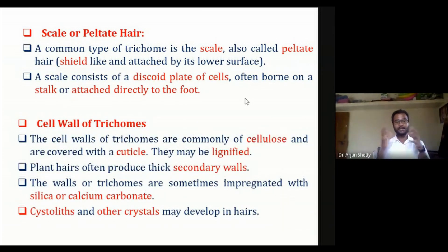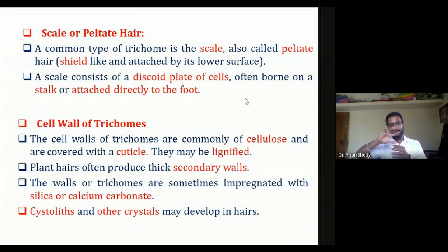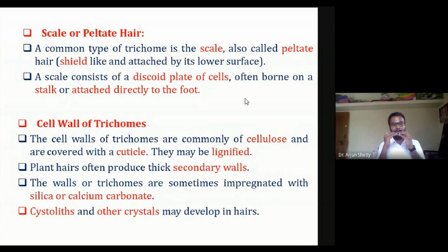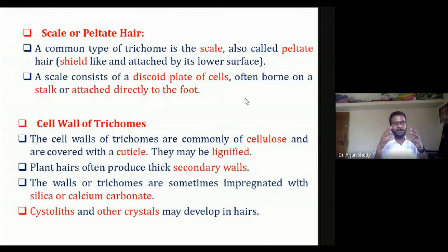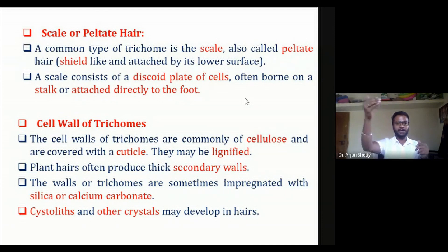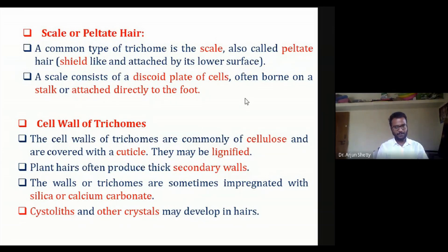The trichome cell wall is commonly made up of cellulose. When the epidermis starts depositing the cuticle, the trichomes also begin depositing cuticle at the same time. If cutinization has not started in the epidermis, the trichomes will also not have cuticle deposition — only cellulose will be present. The chief component of a trichome is cellulose, but trichomes may also have lignified walls.